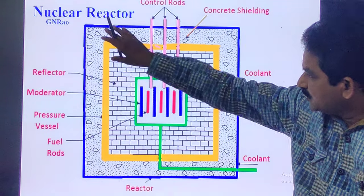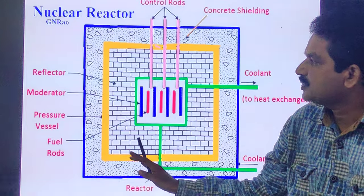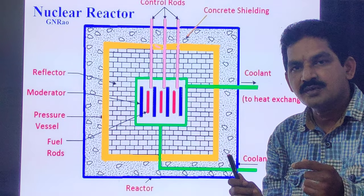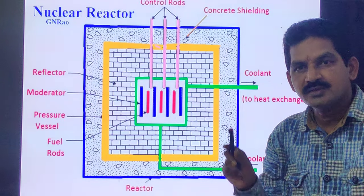Cladding: In order to prevent the contamination of the coolant by fission products, the fuel element is covered with a protective coating. This is known as cladding.